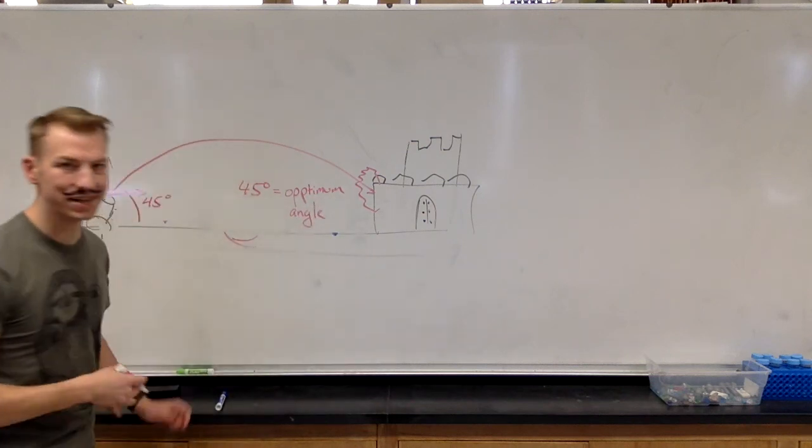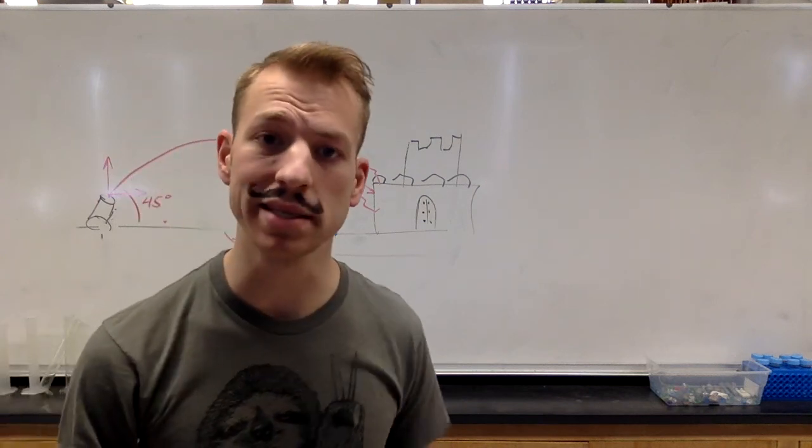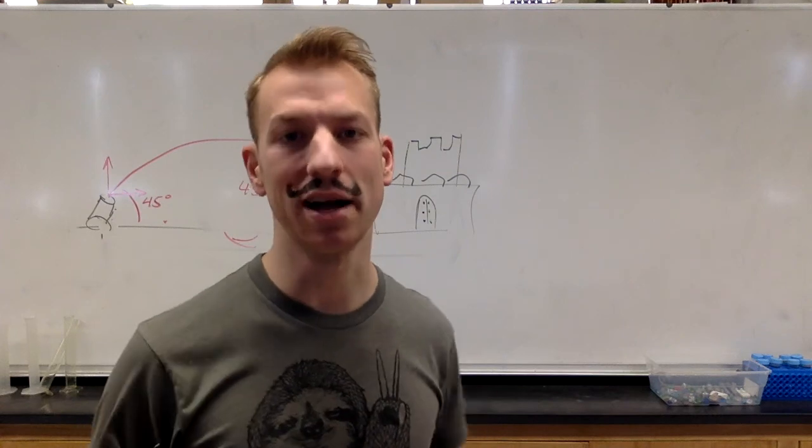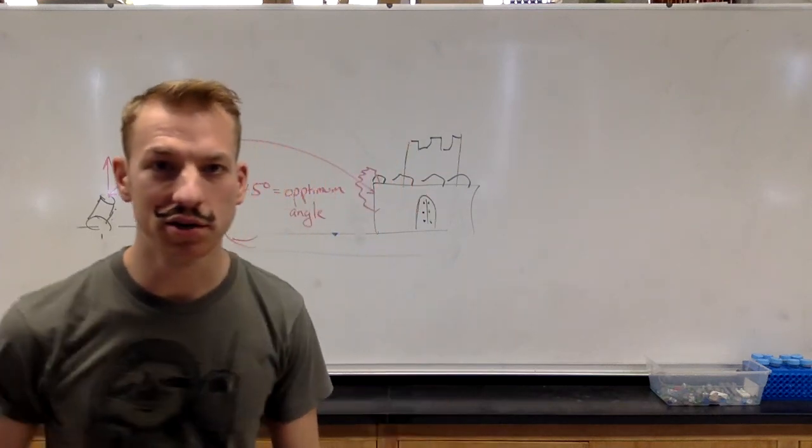So if you ever decide to set up a cannon and besiege some castle, you know that you want to set up your cannon at 45 degrees so that you can get the longest range out of that cannon. We'll talk a lot more about projectiles launched upward during next class.